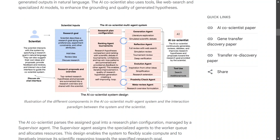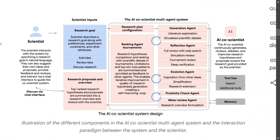Now let's discuss the architecture. The scientist interacts with the system by specifying a research goal in natural language, and discusses it via a chat interface. Top-ranked research hypotheses and proposals are summarized into a research overview shared with the scientist. The scientist can also add ideas, review ideas, and discuss ideas, so there is continuous interaction with the system.